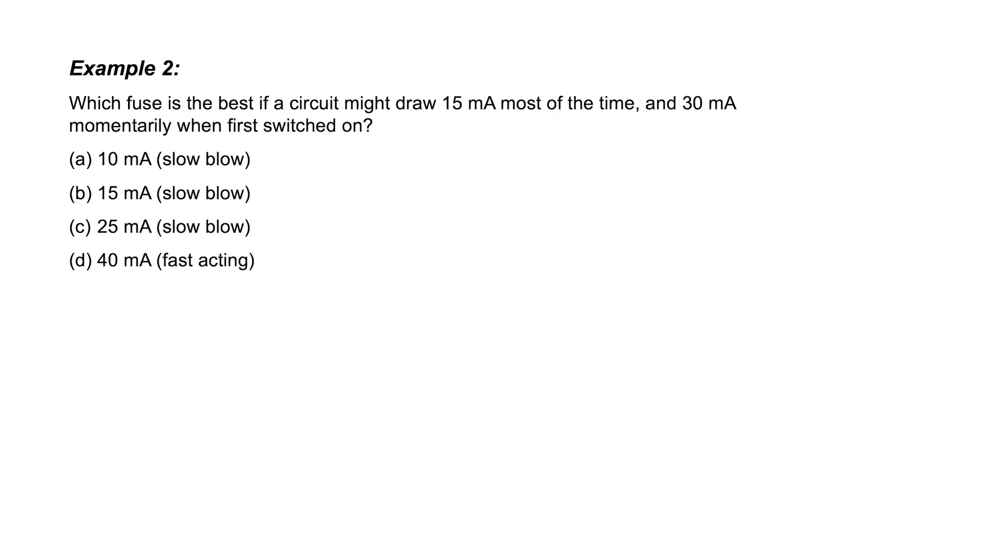Example 2, which fuse is the best if a circuit might draw 15 milliamps most of the time, and 30 milliamps momentarily when first switched on? Well, A is wrong, the fuse would blow out right away. B is wrong, because it'll blow out after a few minutes of use.